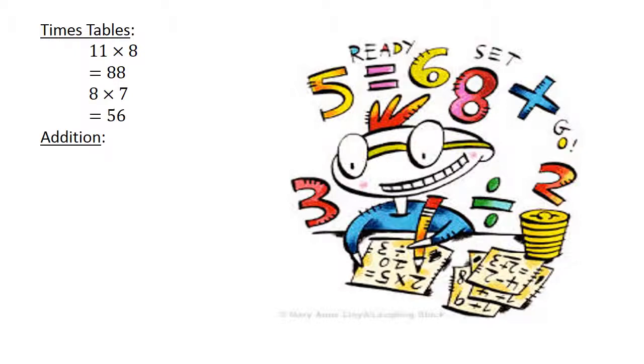Addition. Nineteen plus ninety-five equals one hundred and fourteen.